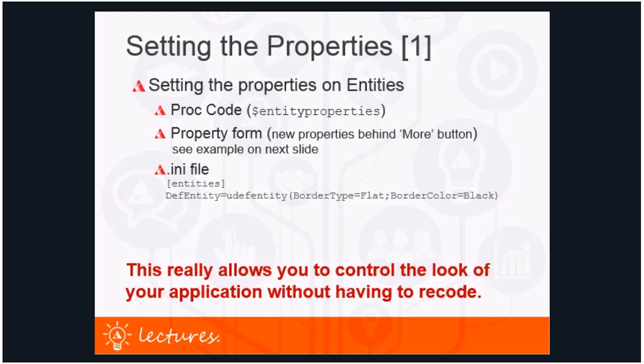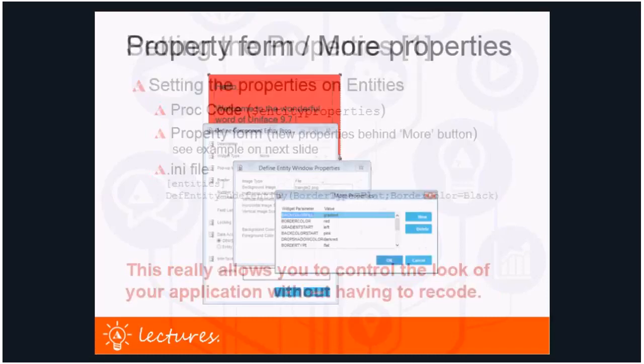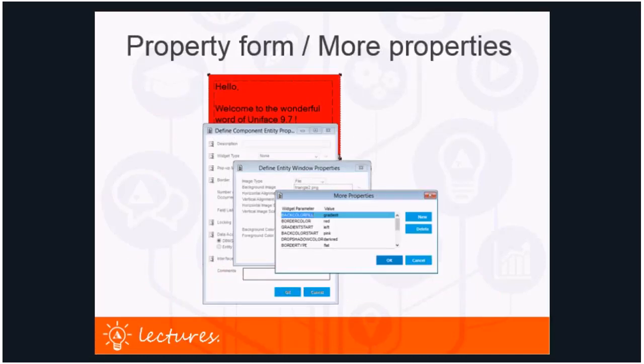We'll have a visual example on the next slide. The third way is through the dot-ini file — in the ini file the properties for entities can be set in the entity section. Assigning properties to the default entity applies them to all entities in your application. On the next slide is the example of the properties form and the more properties form in the UDE, where you can see various new properties behind the more properties button.